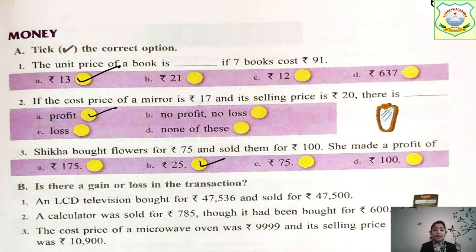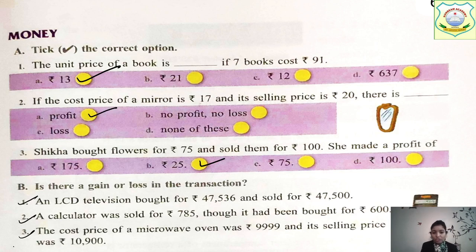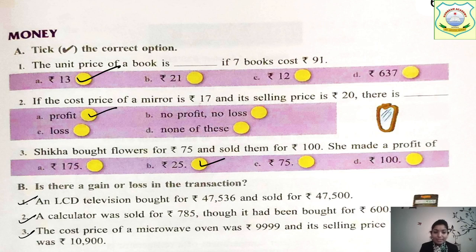Always remember, when there are step-by-step questions you have to solve them in a rough notebook. While giving the annual examination, keep your rough notebook with you and then give the exam — don't forget that. Now question B: is there a gain or loss in the transaction? Here you have to read the questions — there are three transactions — and tell whether each is a gain or loss.